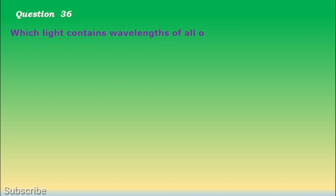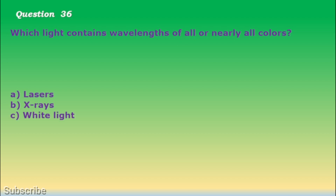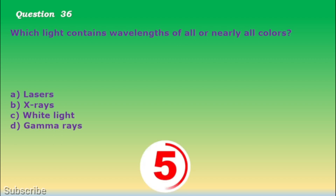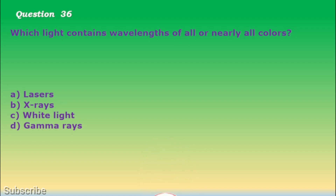Question number 36. Which light contains wavelengths of all or nearly all colors? a. Lasers, b. X-rays, c. White light, d. Gamma rays. The correct answer is letter c. White light.